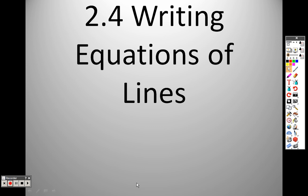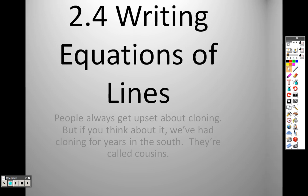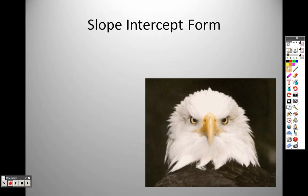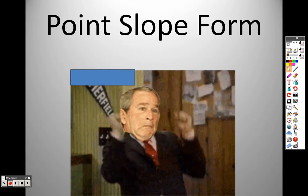Section 2.4 is writing equations of lines. Slope-intercept form, which we talked about in the last section, is y equals mx plus b, where m stands for the slope and b stands for the y-intercept.